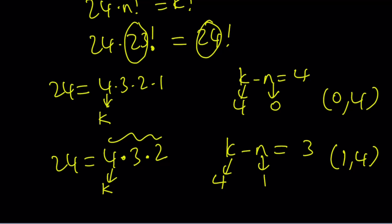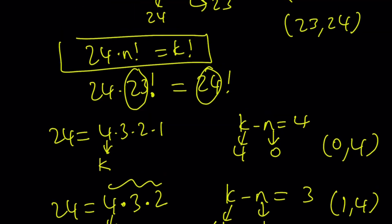Let's explore what this means from our original equation's perspective. If n equals 0, then 24 times 0 factorial, which is 1, equals k factorial, giving k equals 4 because 4 factorial is 24. But 24 times 1 factorial also gives you 24 because 1 factorial is 1, and k equals 4 again. For different n values, we get the same k values.